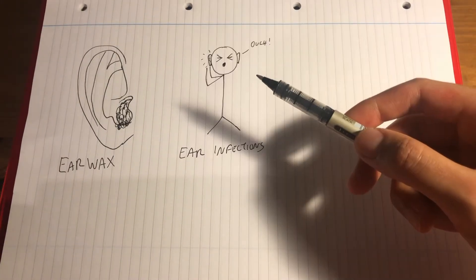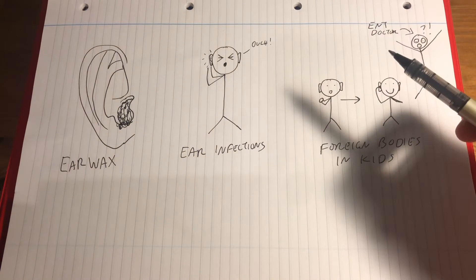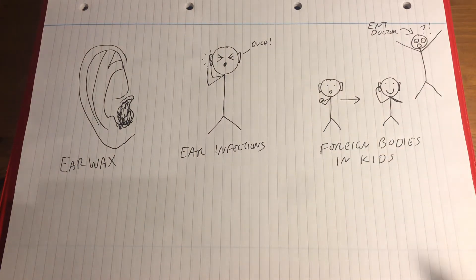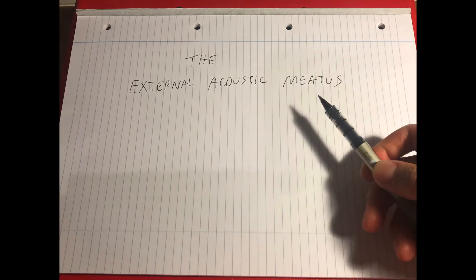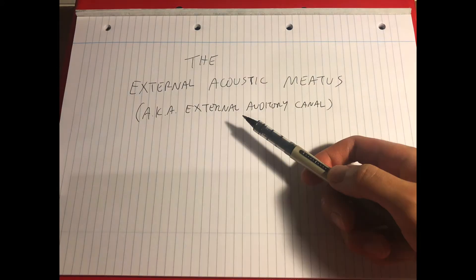Earwax, ear infections, and kids putting things in their ears. These are all really common things that you'll see as a junior ear, nose, and throat doctor. And if you haven't guessed it, today's ENT bite is about the external acoustic meatus, also known as the external auditory canal.